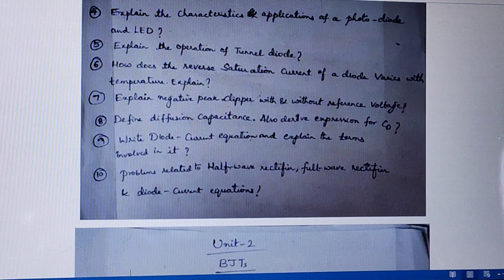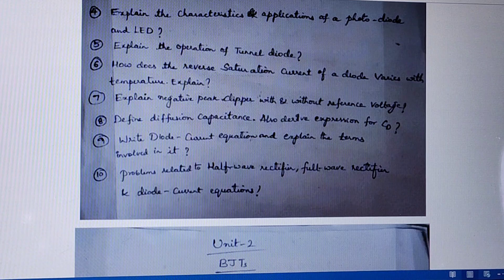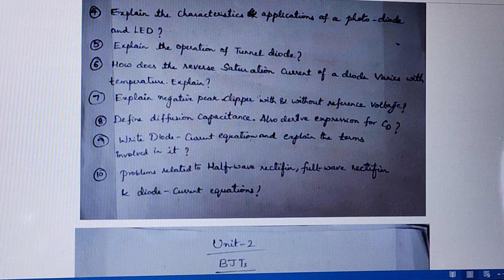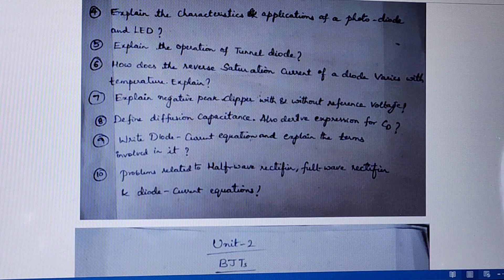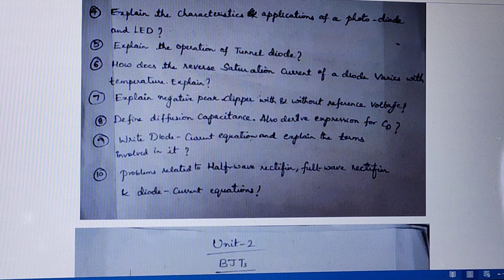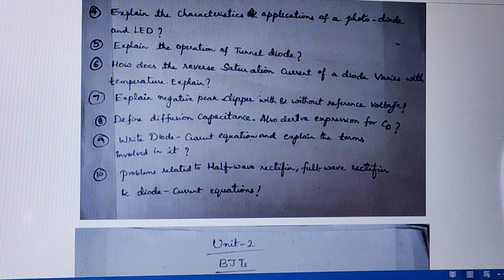Next question is define diffusion capacitance and also derive the expressions for C-D. Write the diode current equation and explain the terms involved in it. From this unit you may also get problems related to half wave rectifier, full wave rectifier, and the diode current equation, so remember all the formulas.